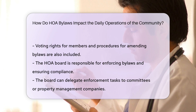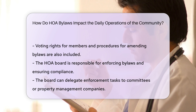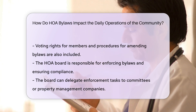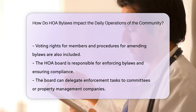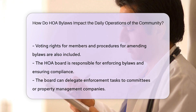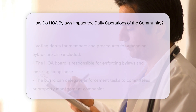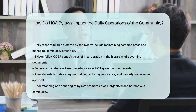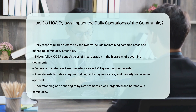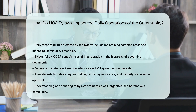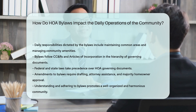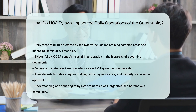Hierarchy of Documents: In the hierarchy of HOA-governing documents, bylaws follow after the CC&Rs — covenants, conditions, and restrictions — and the Articles of Incorporation. Federal and state laws supersede all HOA-governing documents.